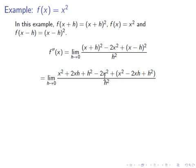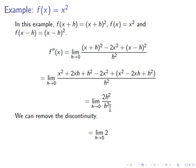So we're left with 2h² over h squared. Notice that this has a removable discontinuity at h equals 0, so we can divide h² by h², and we get the limit of 2 as h approaches 0. When we take the limit, the 2 doesn't change, so our answer is 2. The second derivative of x squared is 2.